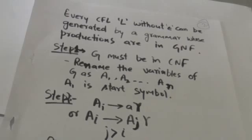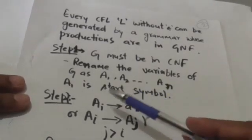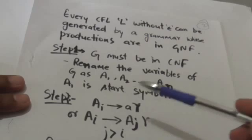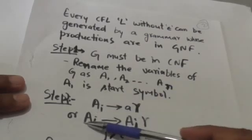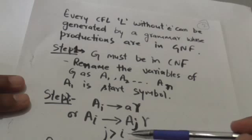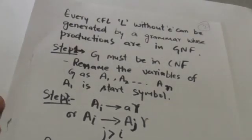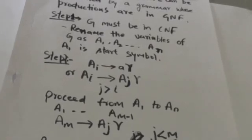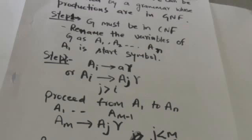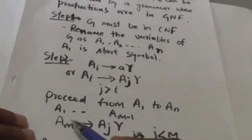After renaming the variables of grammar G, modify the grammar G in such a way that each production is either in the form Aᵢ → aγ, or in the form Aᵢ → Aⱼγ where j is greater than i. To modify the grammar in this way, we will proceed from variable A1 to An and check their productions.